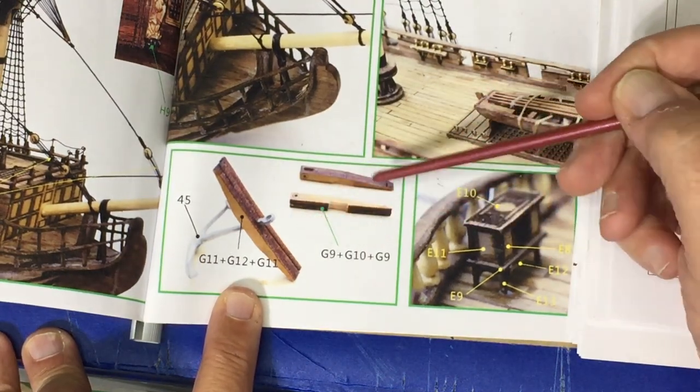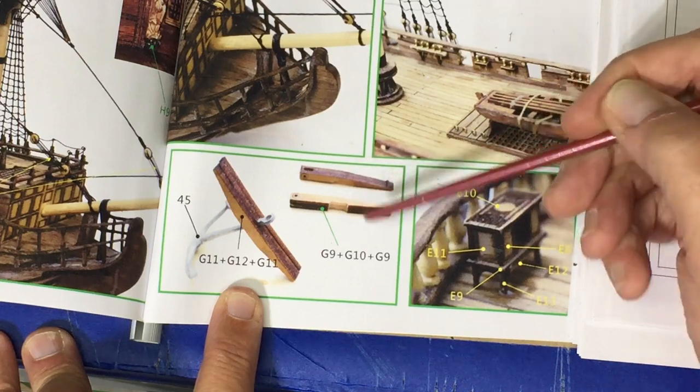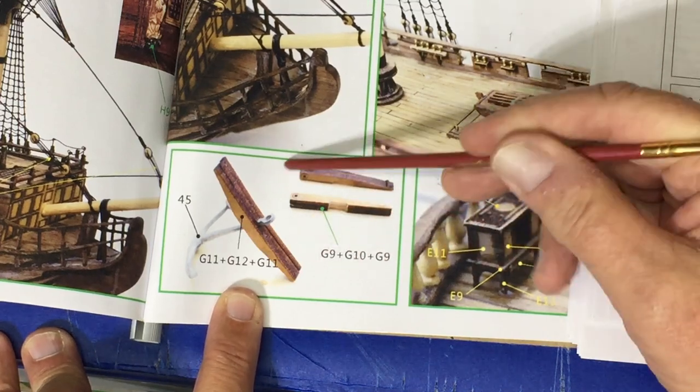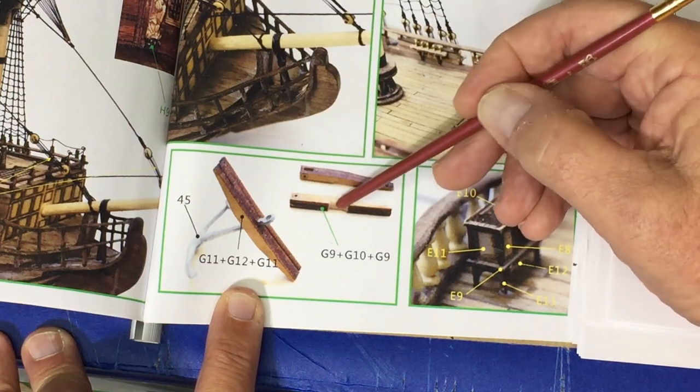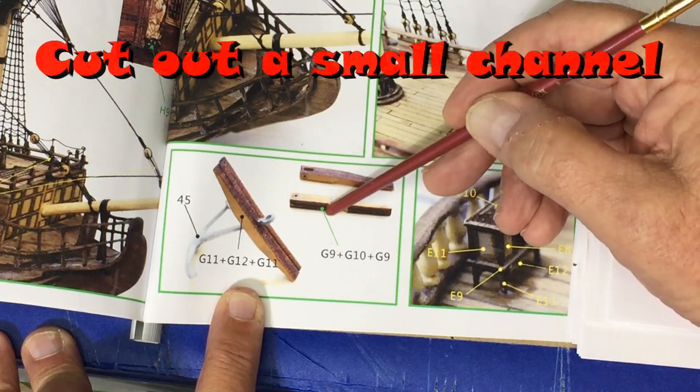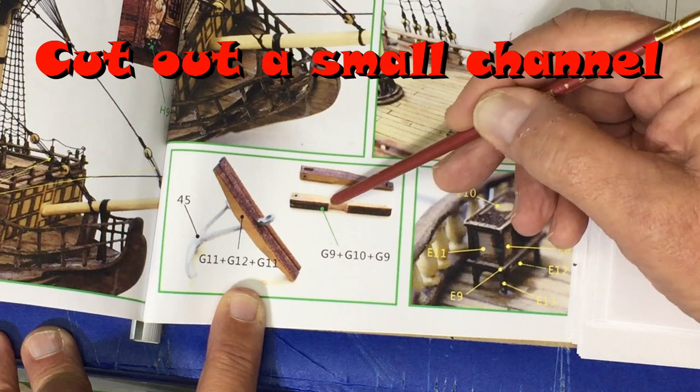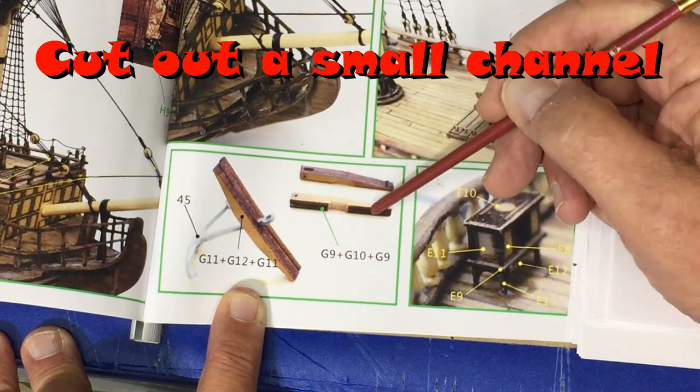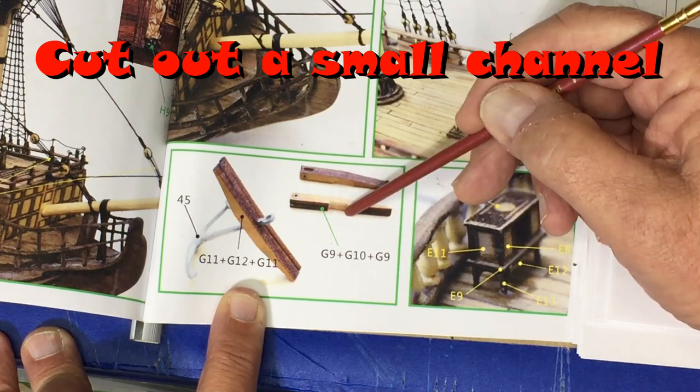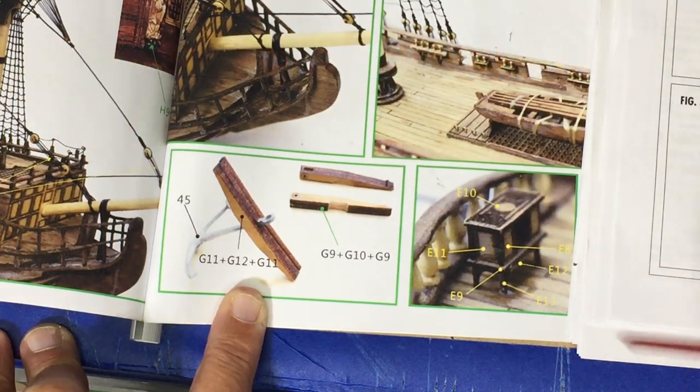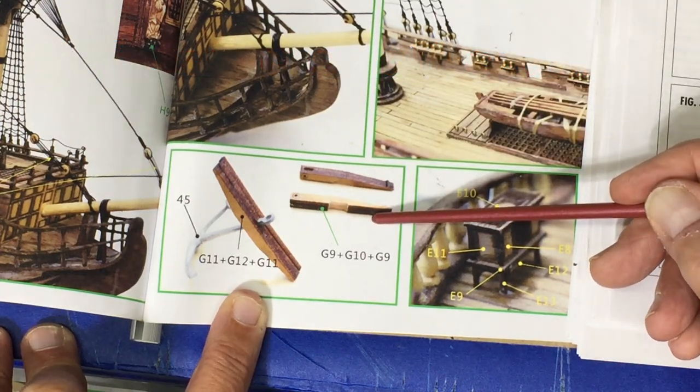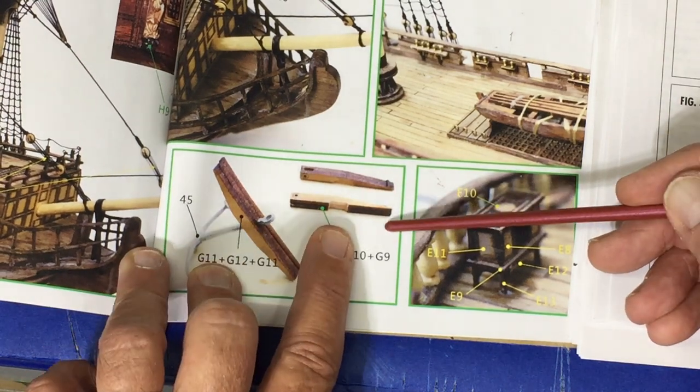If you recall, I said I was going to do some more research on this area right here because I know this supports the anchor. There's not a lot of information in the instructions on how to make this. I did notice that there is a little groove cut out here, and on the actual piece that's not done, so you'll need to do that yourself if you want to have it in there.